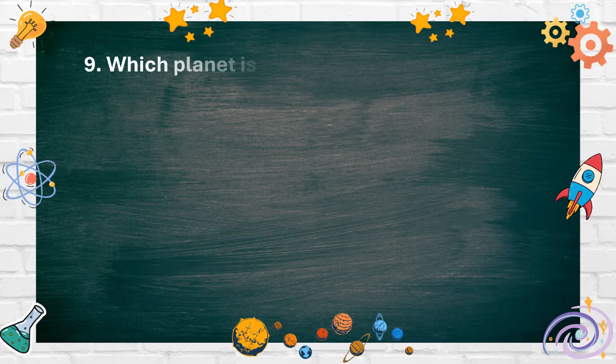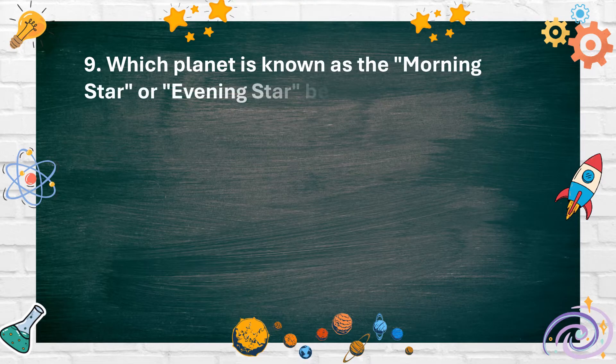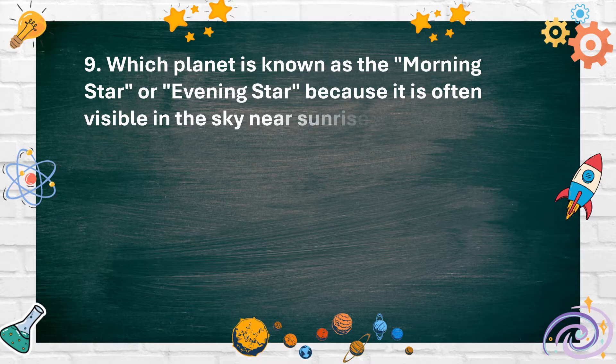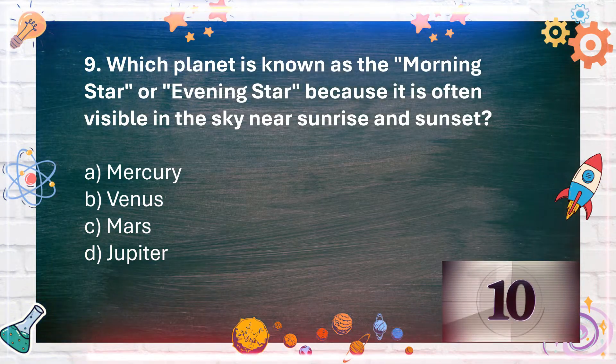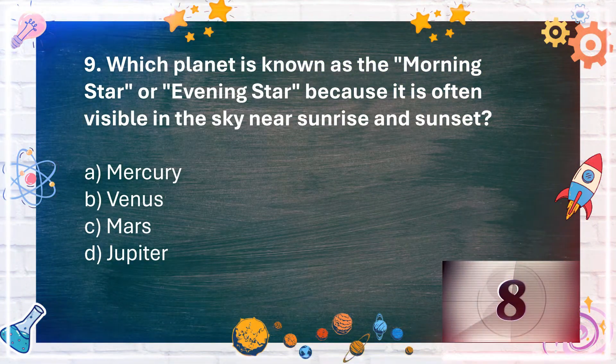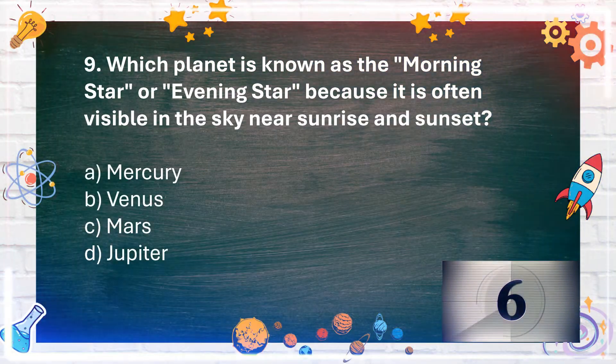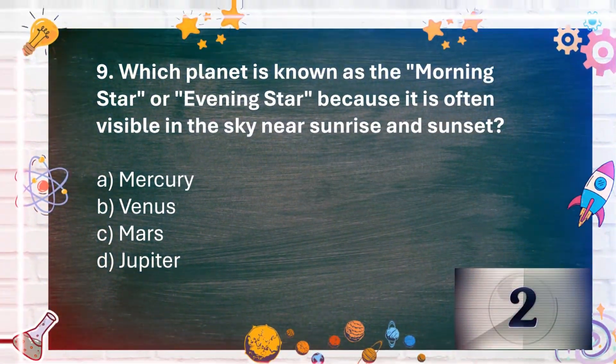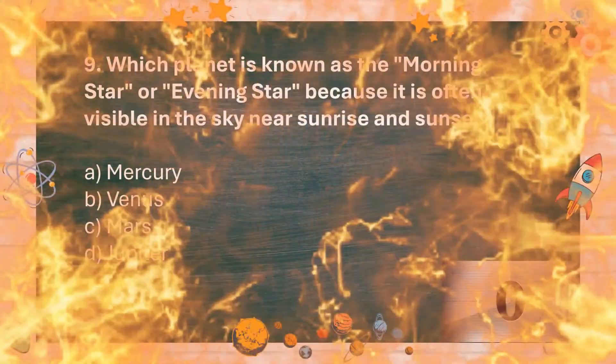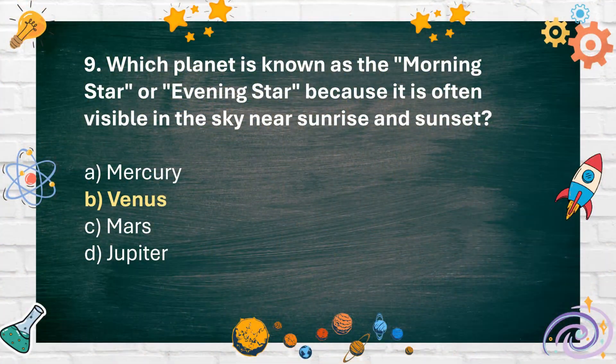Number 9: Which planet is known as the Morning Star or Evening Star because it is often visible in the sky near sunrise and sunset? A. Mercury, B. Venus, C. Mars, D. Jupiter. The answer is B. Venus.